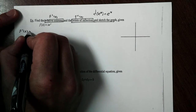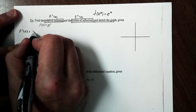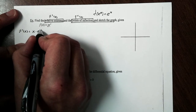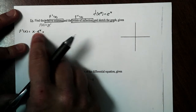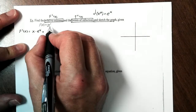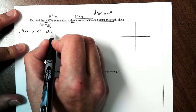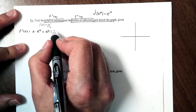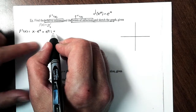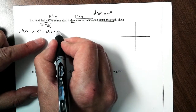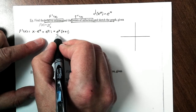I'm going to take my first derivative. This is a product rule: the first times the derivative of the second, which is e to the x, plus the second, which is e to the x, times the derivative of x, which is 1. I'll factor out an e to the x, giving me e to the x times (x + 1). And there's my first derivative.